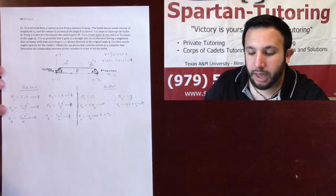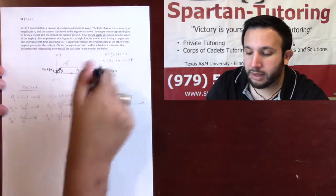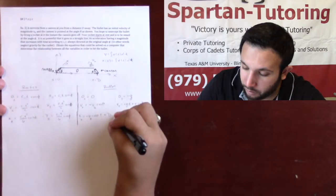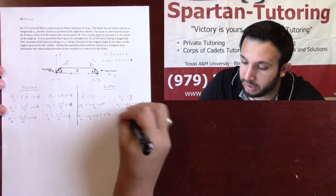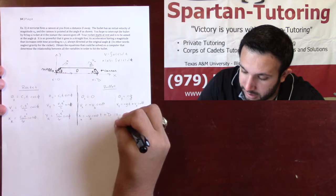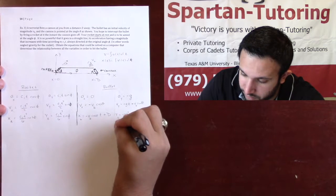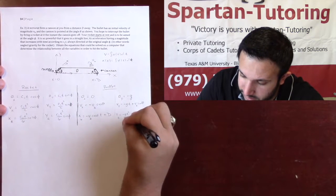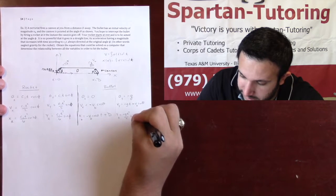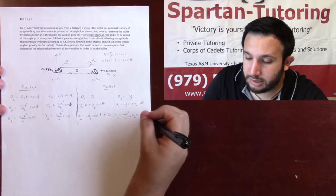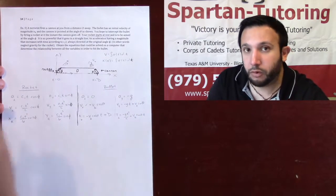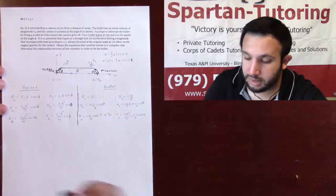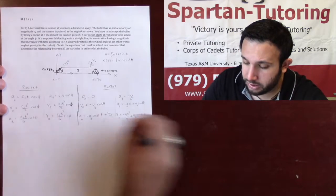For the y direction of the bullet: the initial velocity in y is positive — the bullet is going up — so that's plus vb·sin(theta). Integrating the y acceleration -g gives velocity: -gt + vb·sin(theta). Integrating again gives the y position of the bullet: -gt²/2 + vb·sin(theta)·t, plus the initial y position which is zero.